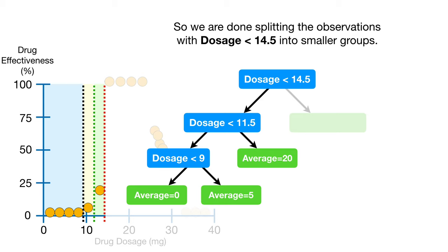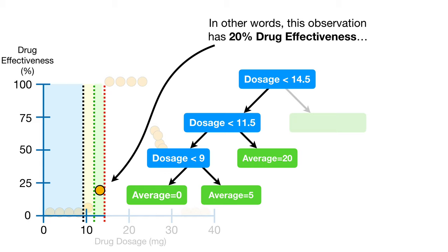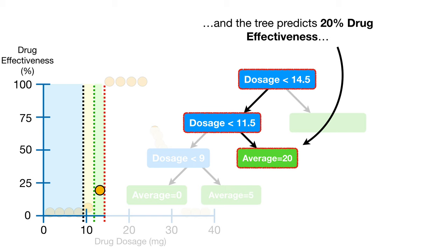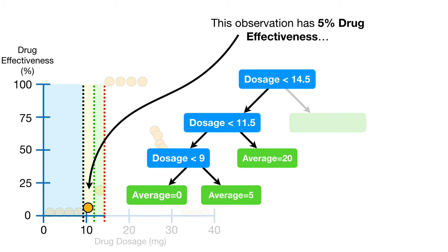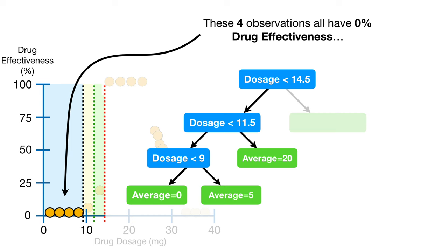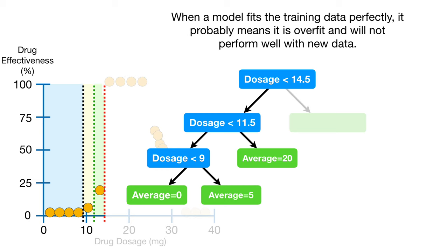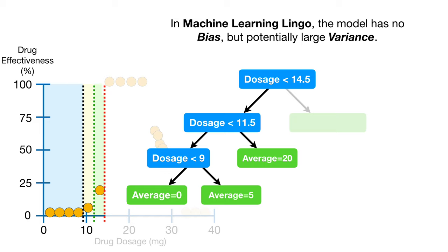So we are done splitting the observations with dosage less than 14.5. Note that the predictions this tree makes for all observations with dosage less than 14.5 are perfect. For example, one observation has 20% drug effectiveness and the tree predicts 20%; another has 5% and that's exactly what the tree predicts; and four observations have 0% drug effectiveness, which is exactly what the tree predicts. Is that awesome? No. When a model fits the training data perfectly, it probably means it is overfit and will not perform well with new data. In machine learning lingo, the model has no bias but potentially large variance.